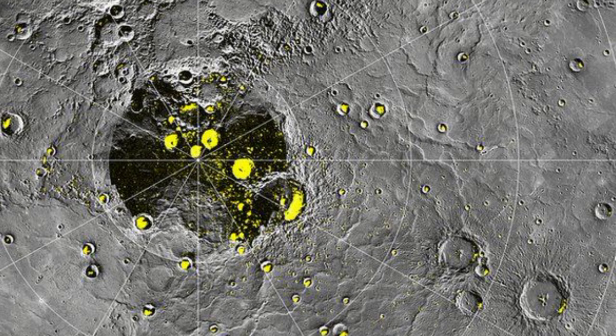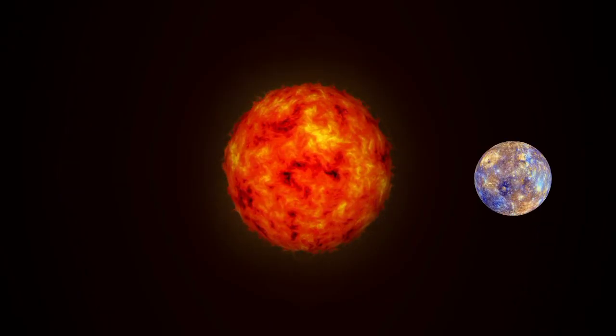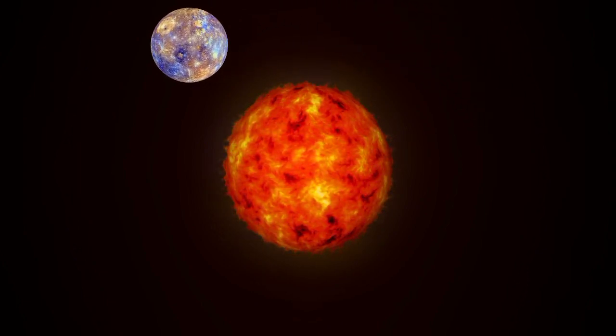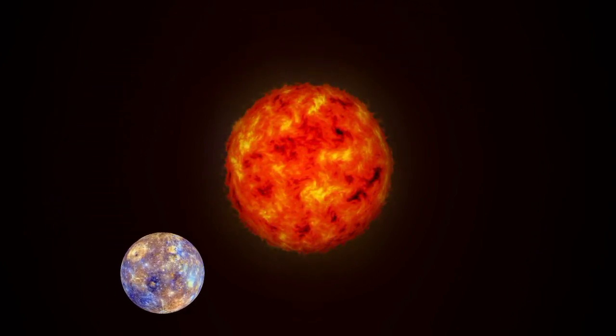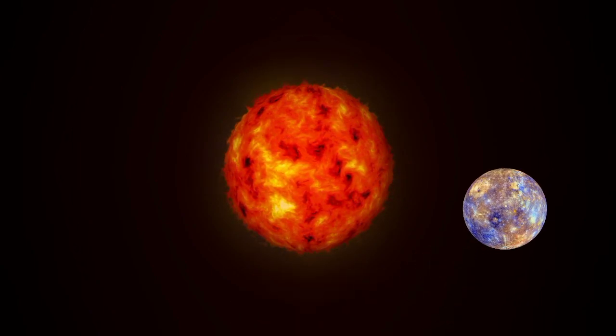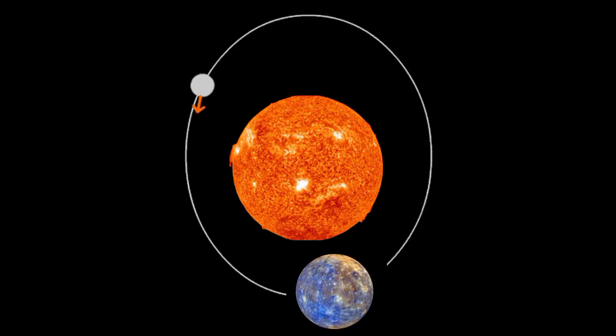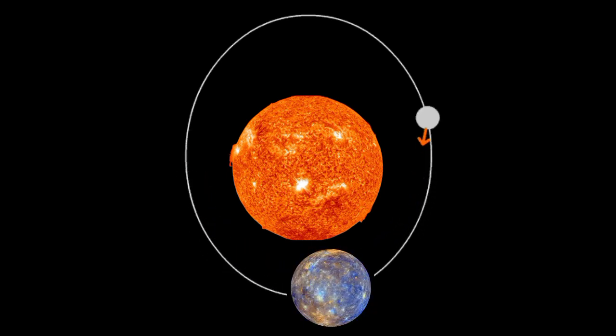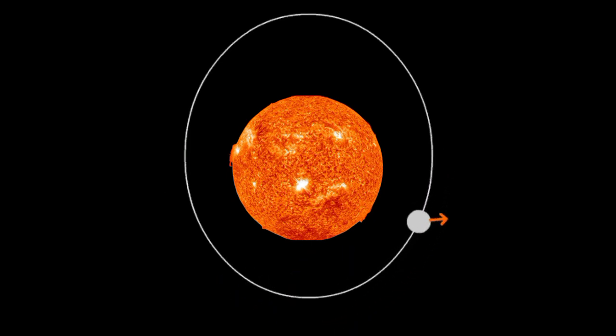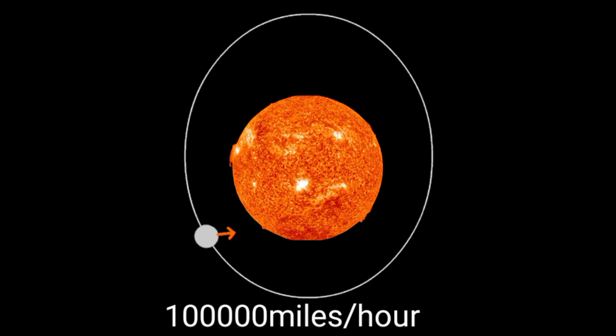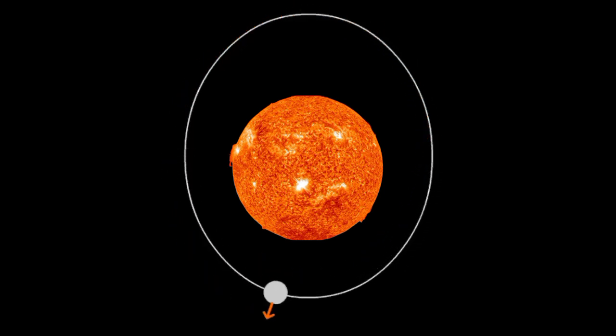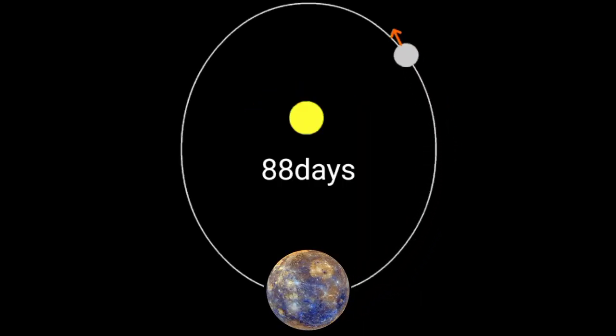Mercury's proximity to the Sun is also the reason behind its age-old reputation of being swift and fleeting. The Sun's gravity pulls harder on Mercury than any other planet. Mercury travels in an elliptical orbit, slowing down when it's farther away from the Sun and accelerating as it draws closer, clocking in at an average speed of over 100,000 miles per hour.